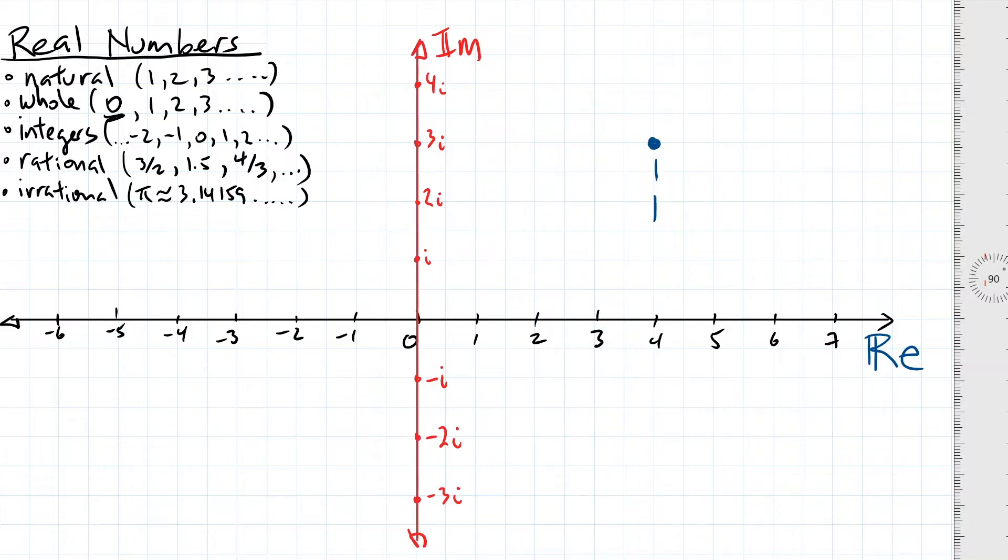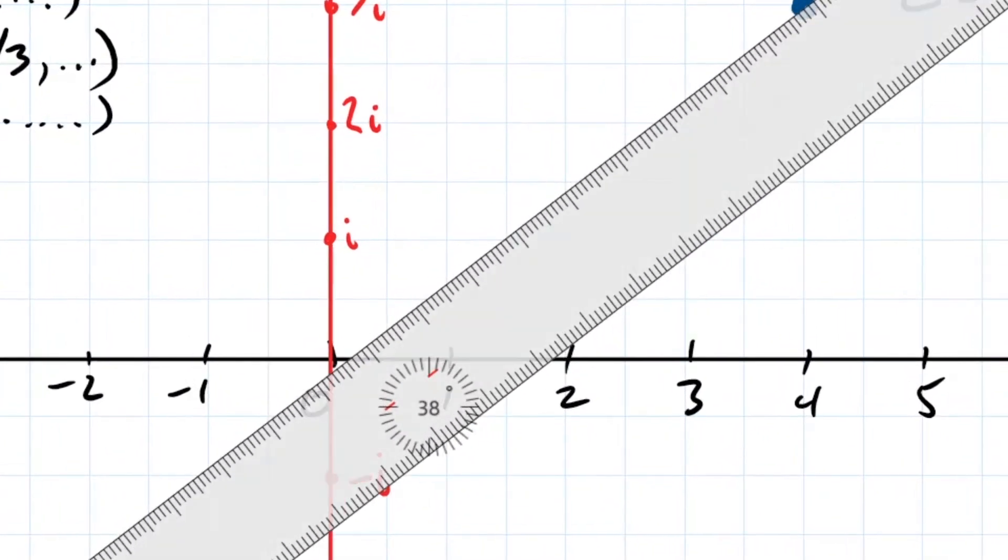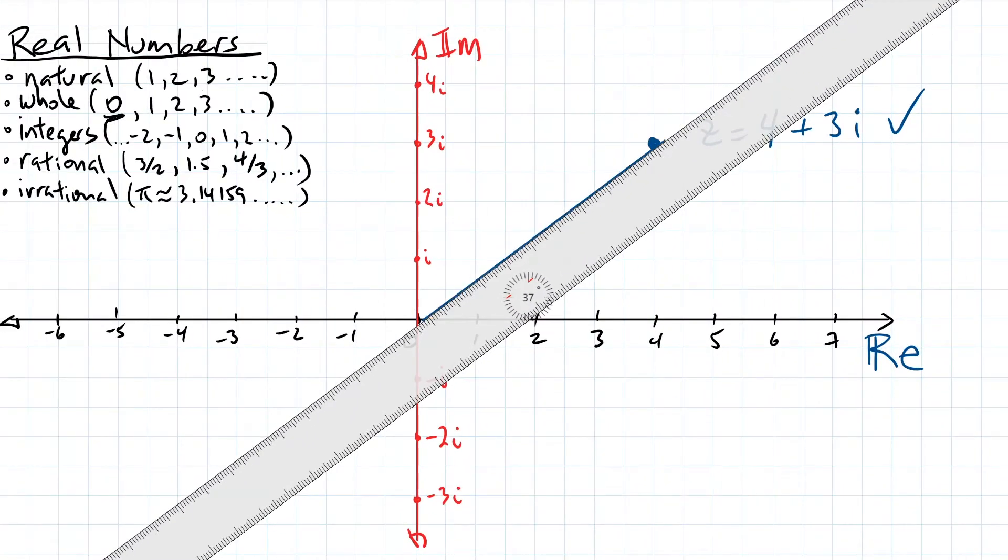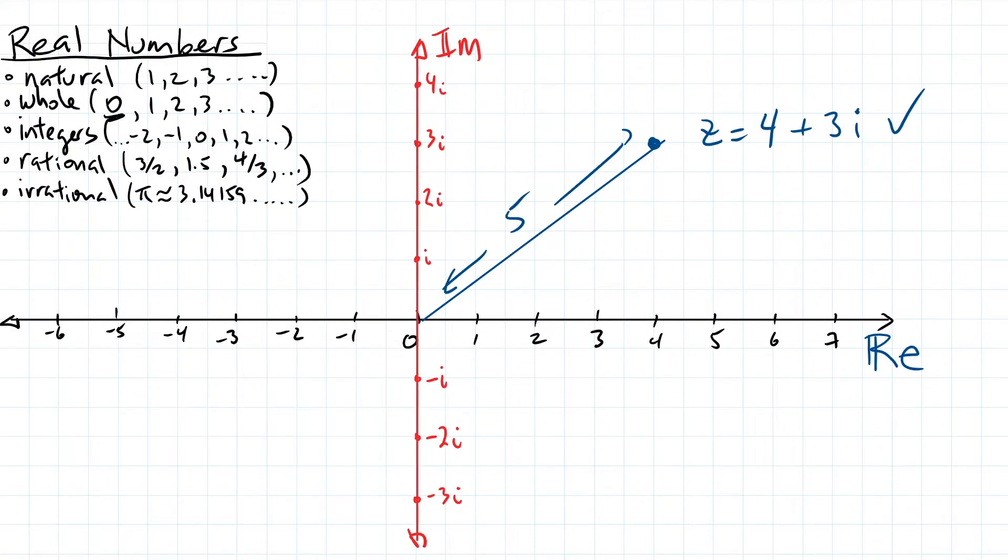We see that this number is partially real and partially imaginary. If we count across, the real component is 4. And if we count upwards, the imaginary component is 3i. If we use a protractor, we see that this number is roughly 37 degrees out of alignment with the real axis. And if we use a ruler, we see that this number is 5 units away from 0.